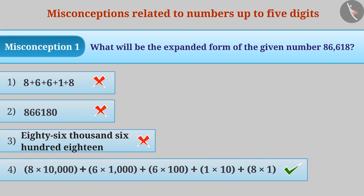To clear this misconception, it is important to understand that the number 8 is at ten thousands place, 6 is at thousands place, at the hundreds place is 6, 1 is at the tens place and 8 is in the ones place.